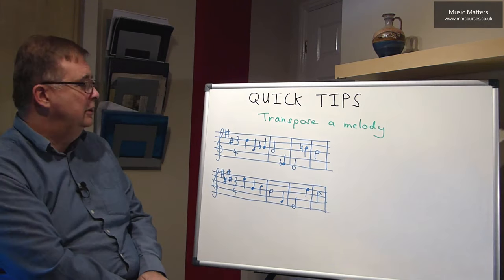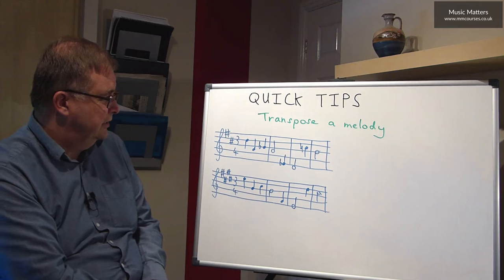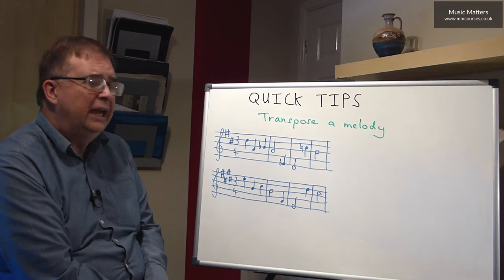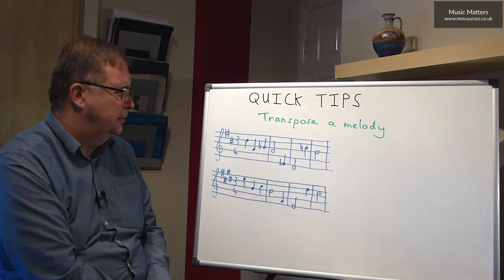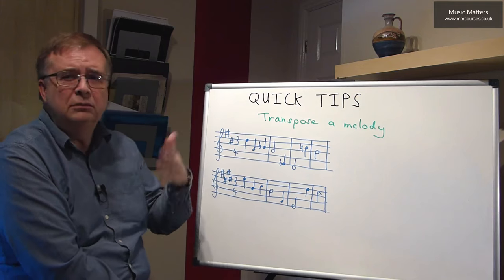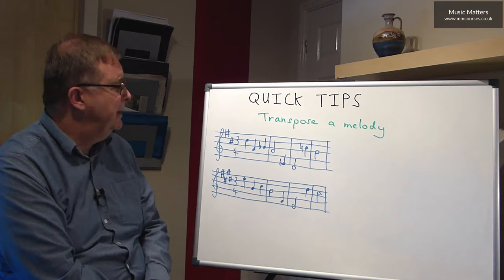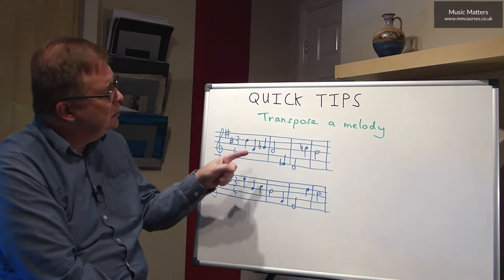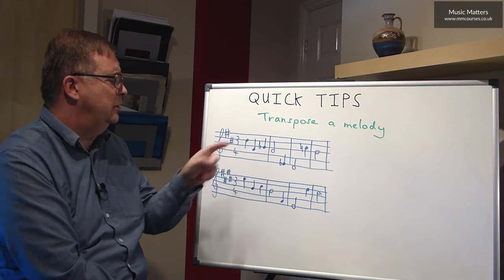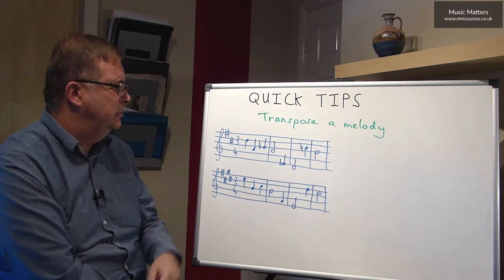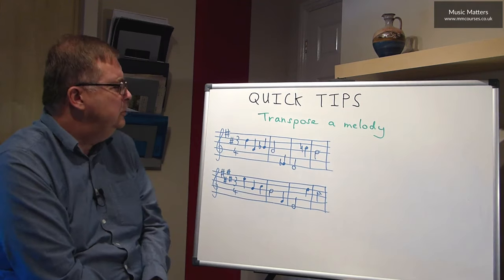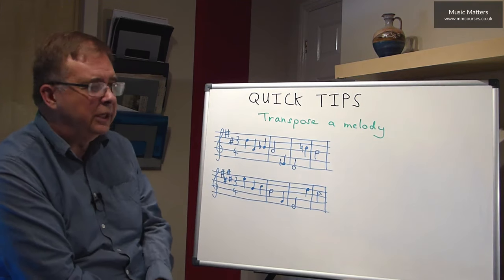Then you go back and look at the accidentals, and work out how to deal with them. What we're doing here is going up a tone, or going up a major second. So you could look at all of these notes and say, what's a major second above B-flat? But you could also do it this way.